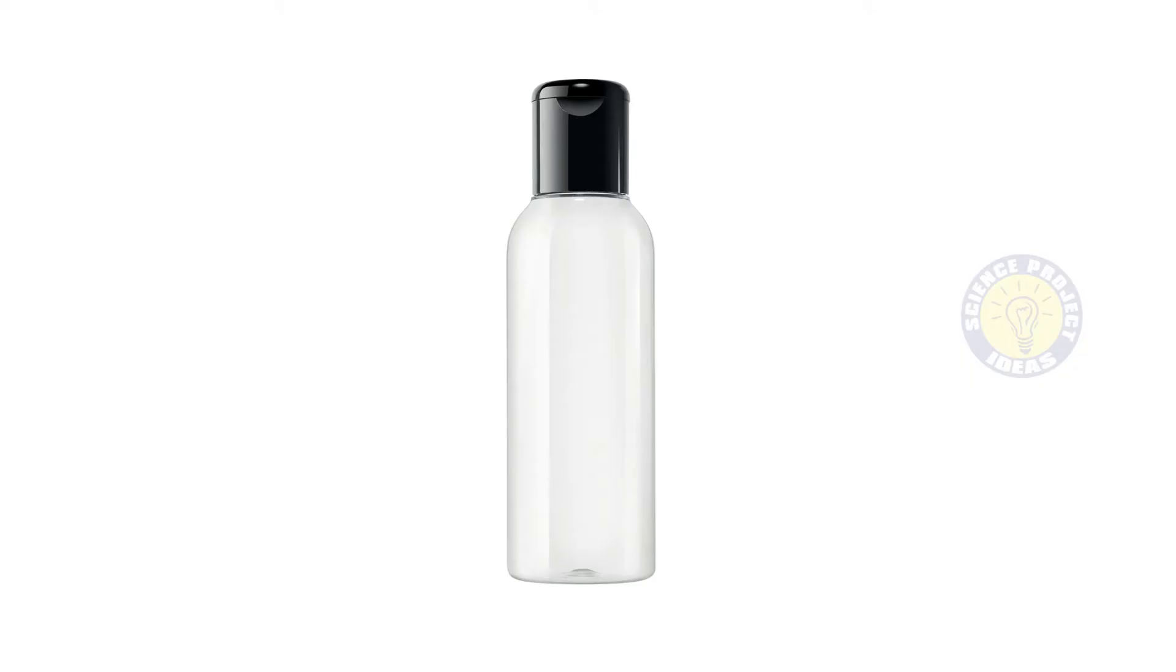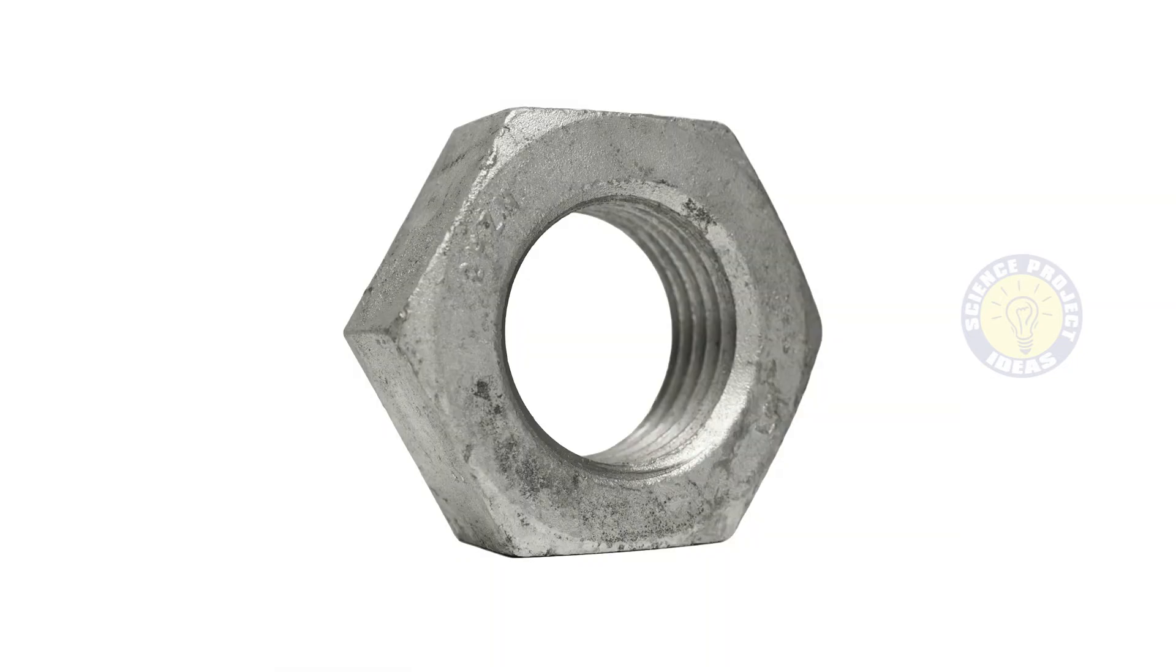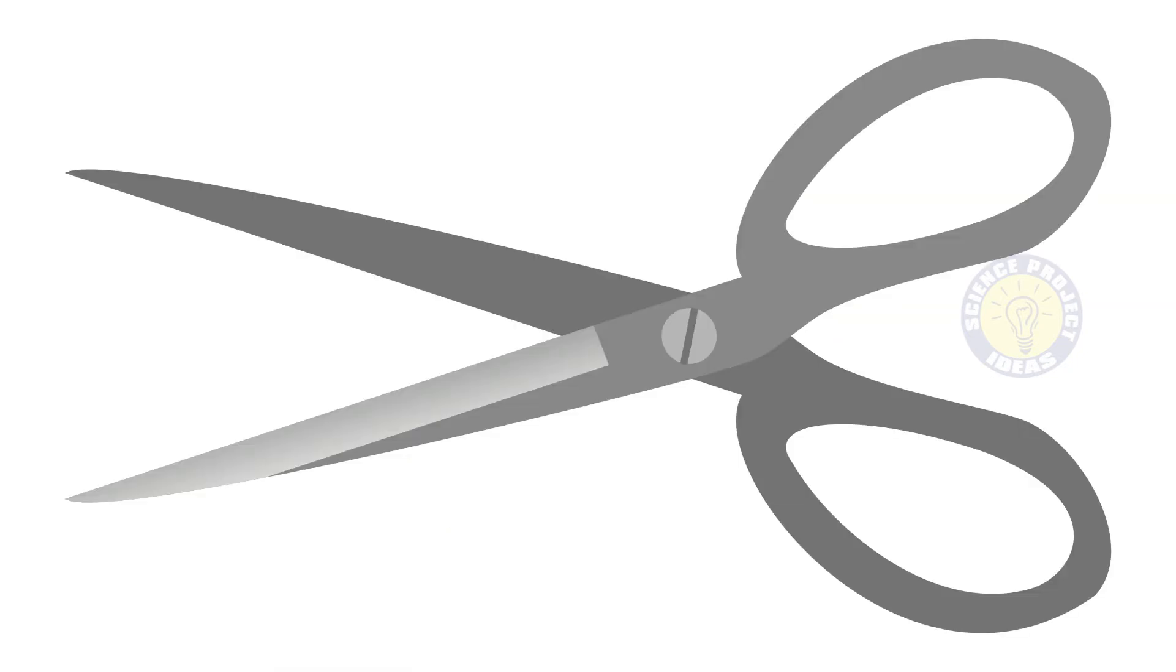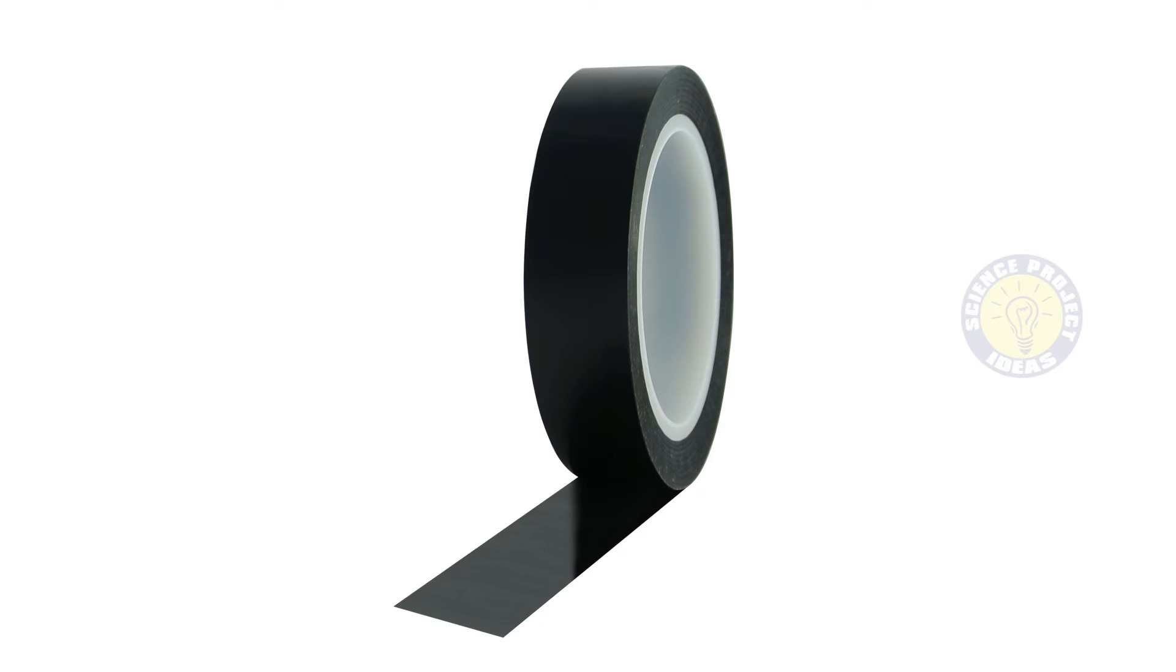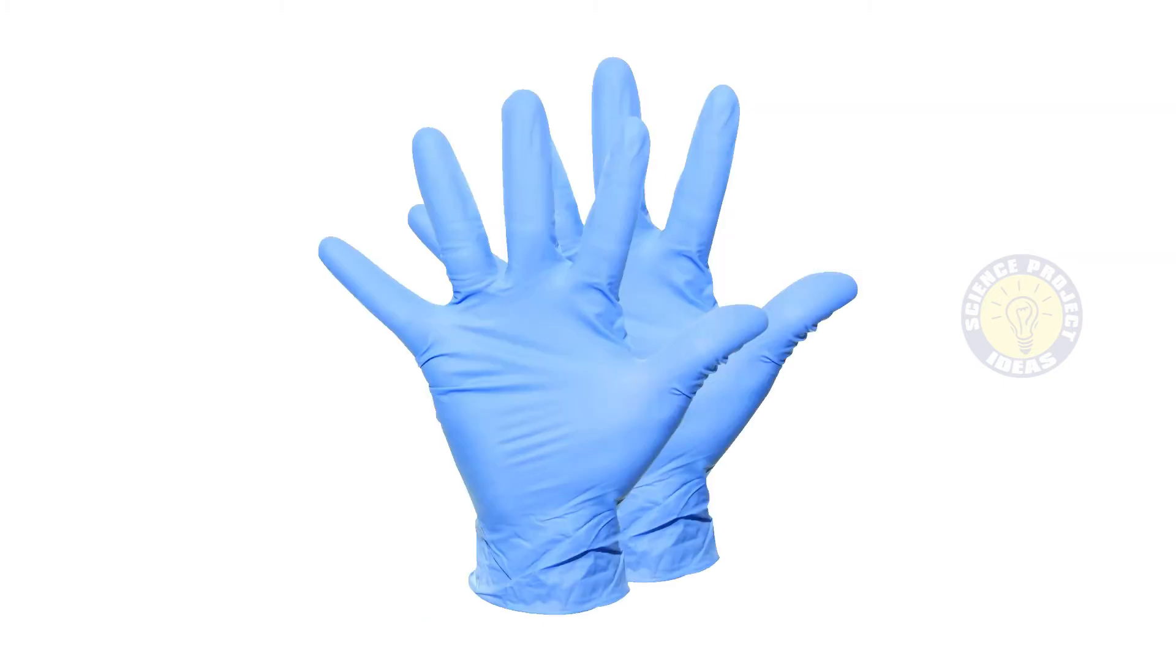Materials for Cartesian Diver: empty plastic 1 liter or 2 liter bottle with a lid, graduated pipette, hex nut depending on the size of your pipette, scissors, Sharpies to decorate your bottle and dropper. To make a squiddy diver: electrical tape and disposable plastic glove.